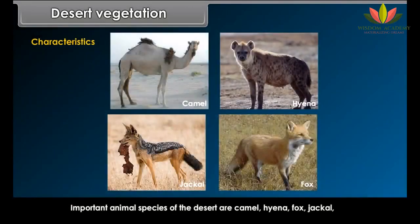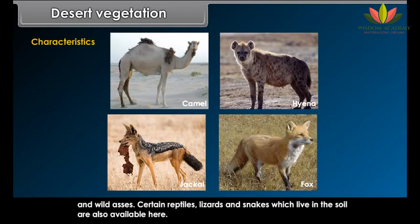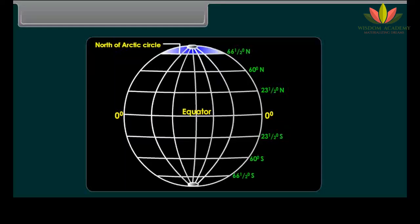Important animal species of the desert are camel, hyena, fox, jackal and wild asses. Certain reptiles, lizards and snakes which live in the soil are also found here.